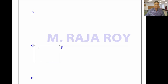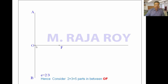Now divide OF into some number of equal divisions, which you decide based on the SMCT. Here SMCT is 2 by 3, meaning add the numerator and denominator: 2 plus 3 equals 5. So divide OF into 5 equal parts as shown here. You can use the inclined line method to divide this into 5 equal parts.